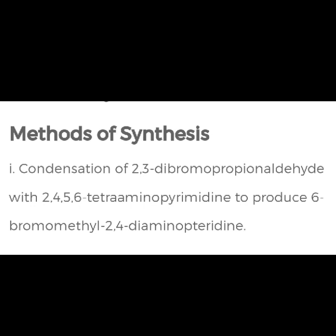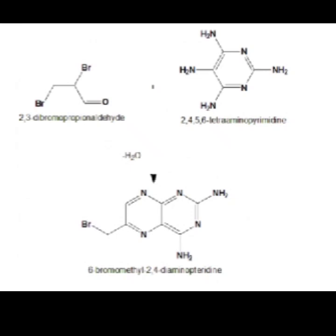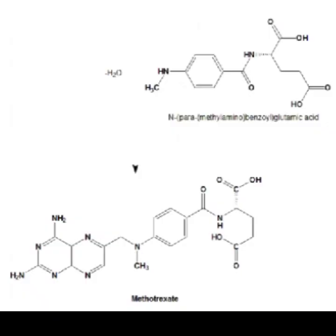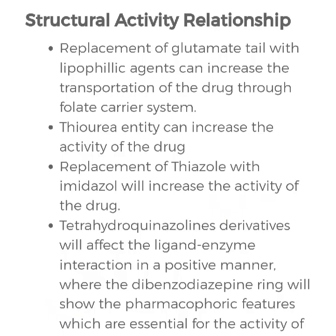The synthesis of Methotrexate involves condensation of 2,3-dibromopropionaldehyde with 2,4,5,6-tetraaminopyrimidine to produce 6-bromomethyl-2,4-diaminopteridine. This intermediate then undergoes further condensation with N-para-methylaminobenzoylglutamic acid, leading to the synthesis of Methotrexate.